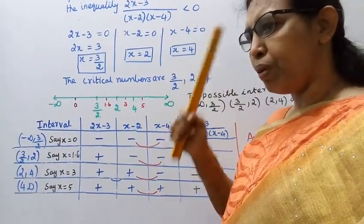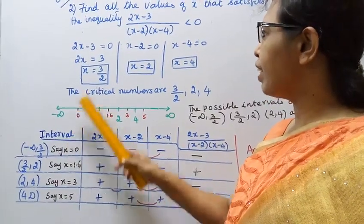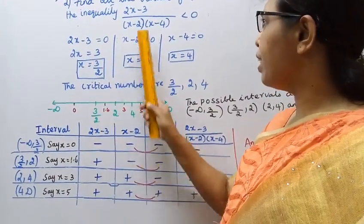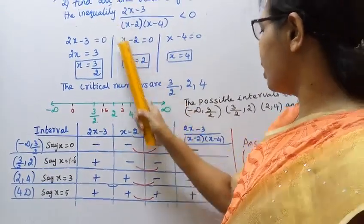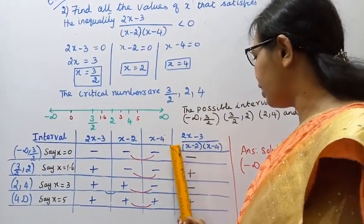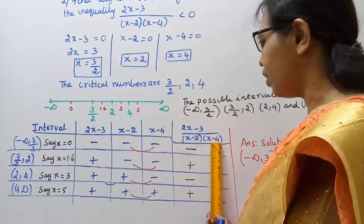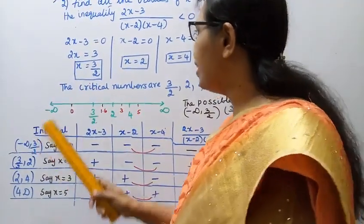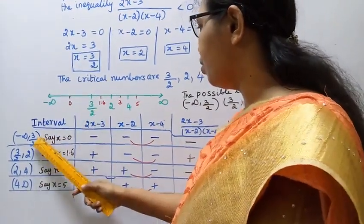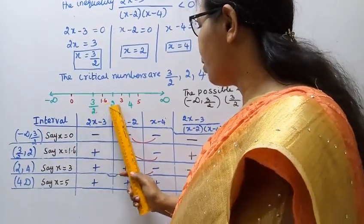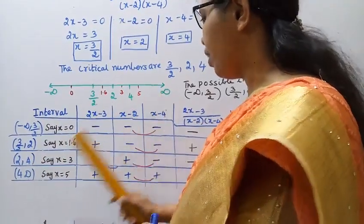Now set up the tabular column. The intervals range from minus infinity to infinity. The columns are: interval, 2x-3, x-2, x-4. The intervals to test are: minus infinity to 3/2, then 3/2 to 2, then 2 to 4, then 4 to infinity.